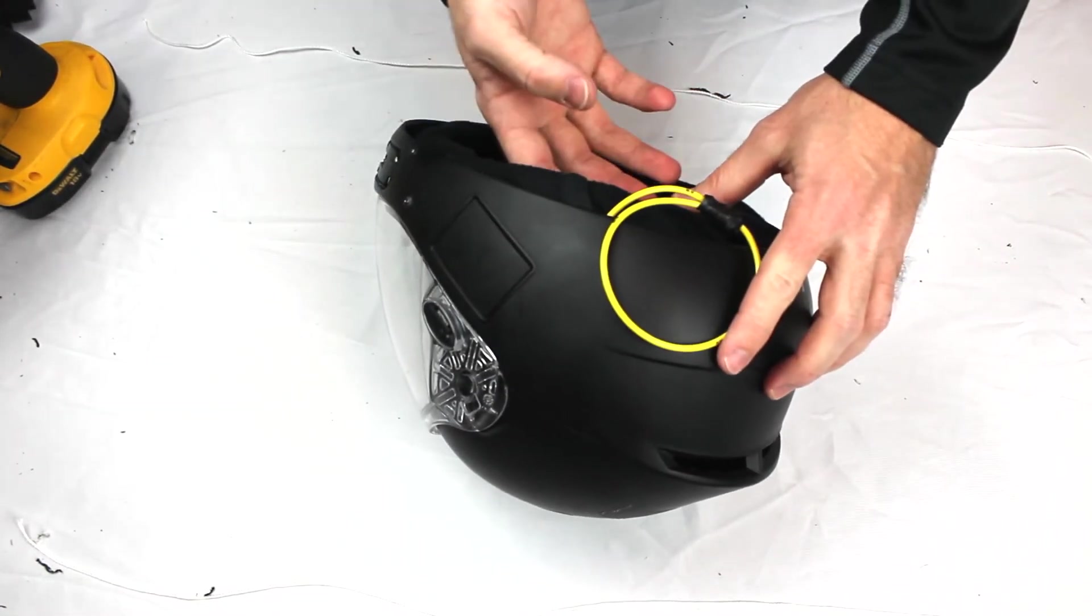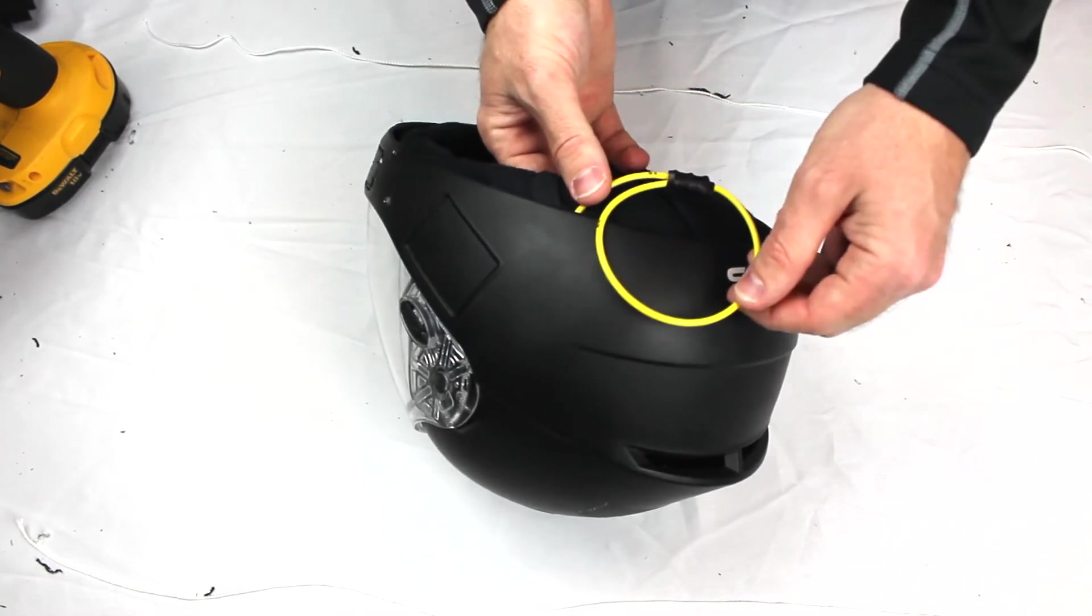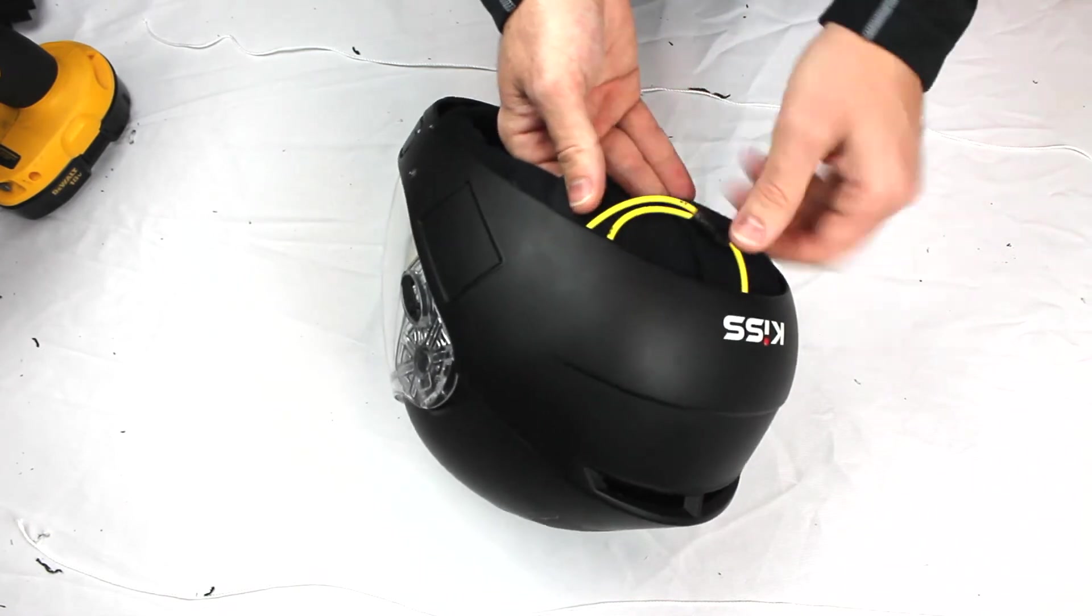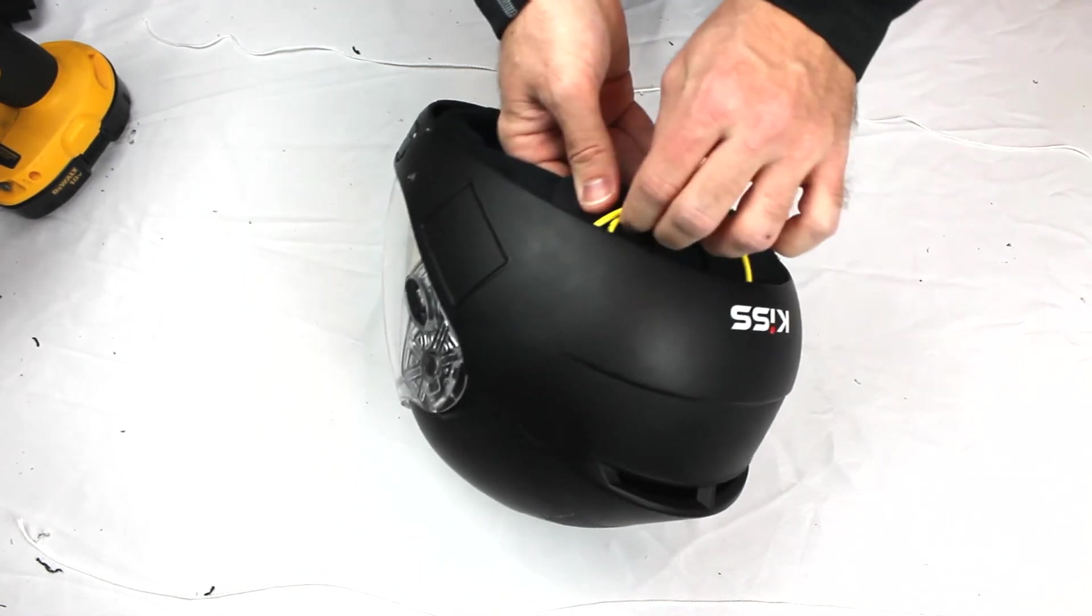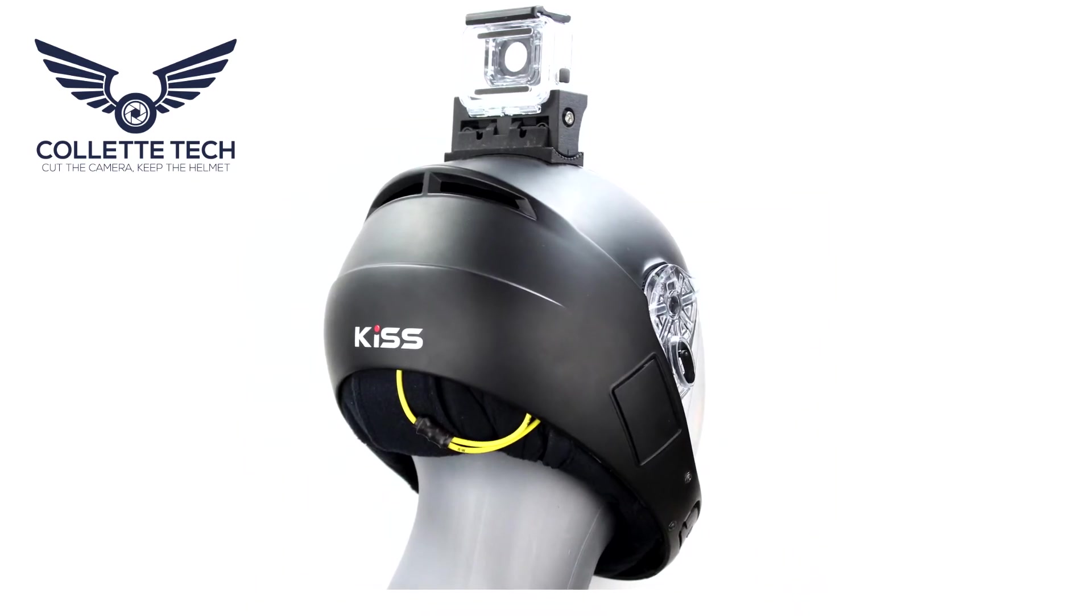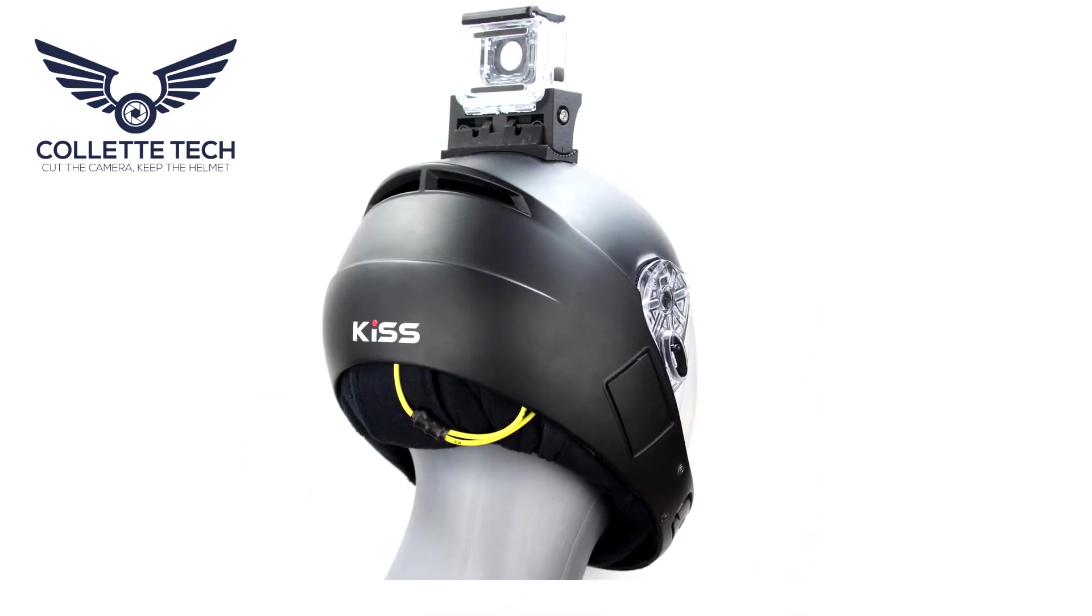Further secure the cutaway handle loop by pointing the loop towards the back of the helmet. This is important for the handle to avoid catching on bolts or hardware inside the helmet. Further tuck the handle between the pad and the shell, while leaving enough to easily access the handle for a cutaway.